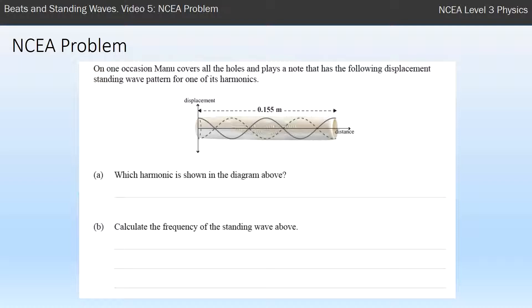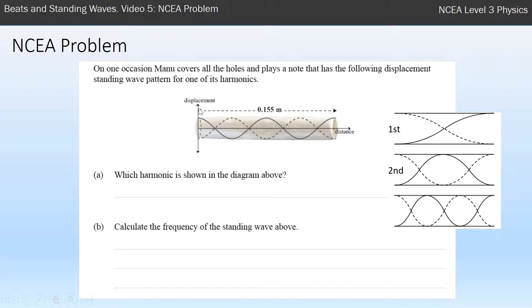With an open pipe, we have antinodes at each end, and you can clearly see that there. To make sure I get this right, I'll draw all of the standing waves in order on the side of my page. The first one has an antinode at one end and an antinode at the other—that looks like half a wave. The next one is one whole wave, then one and a half waves, and this one in the question looks like two whole waves. So I've actually got the fourth harmonic here.